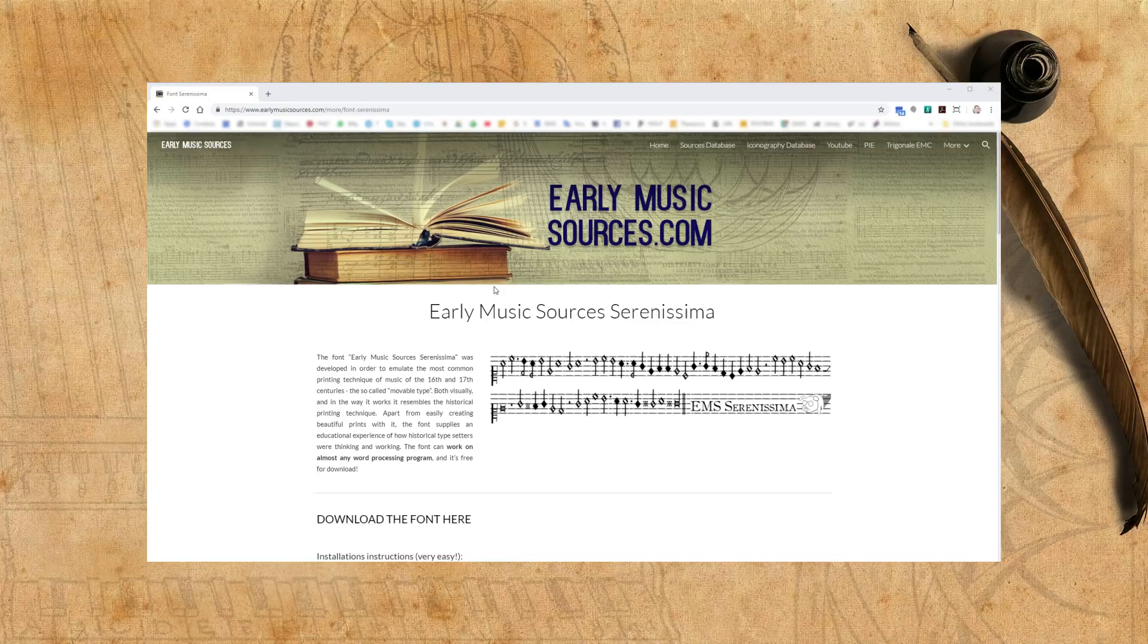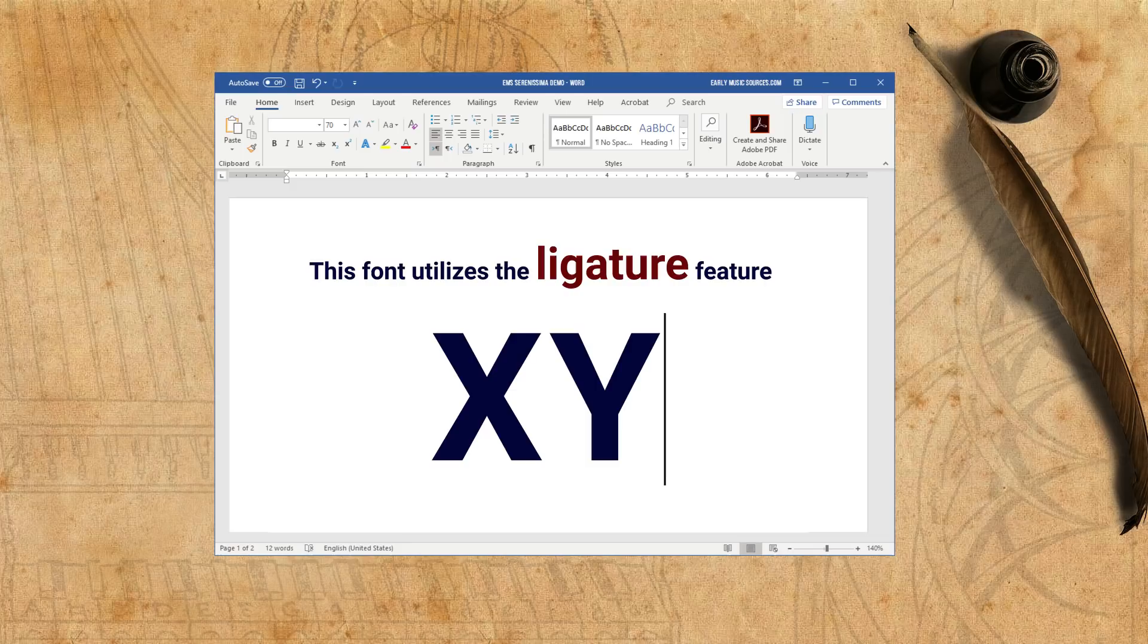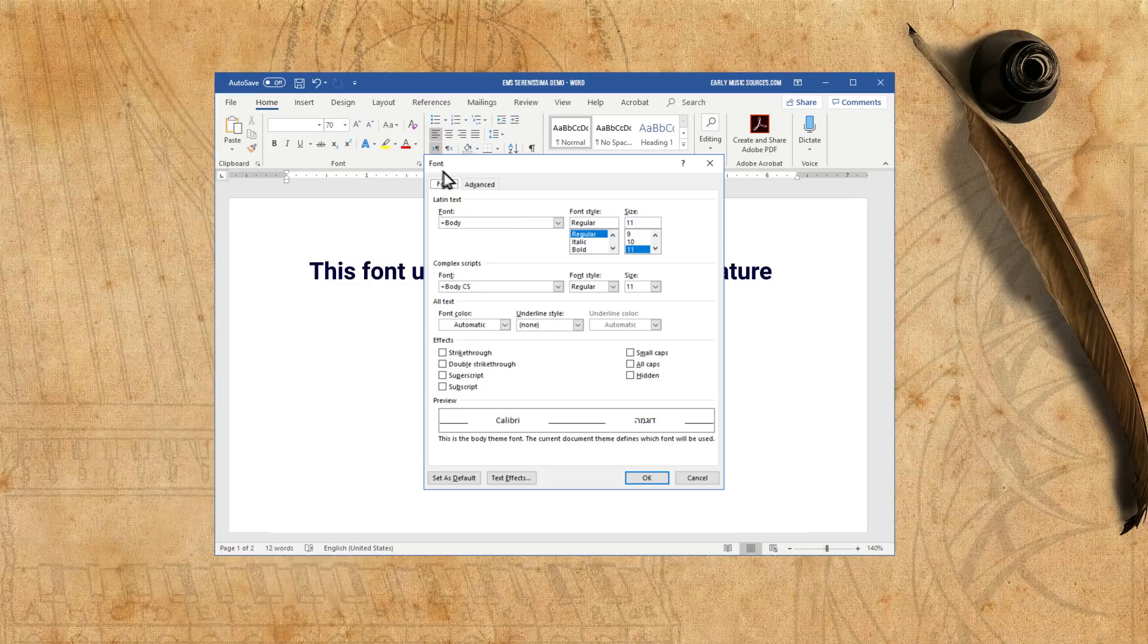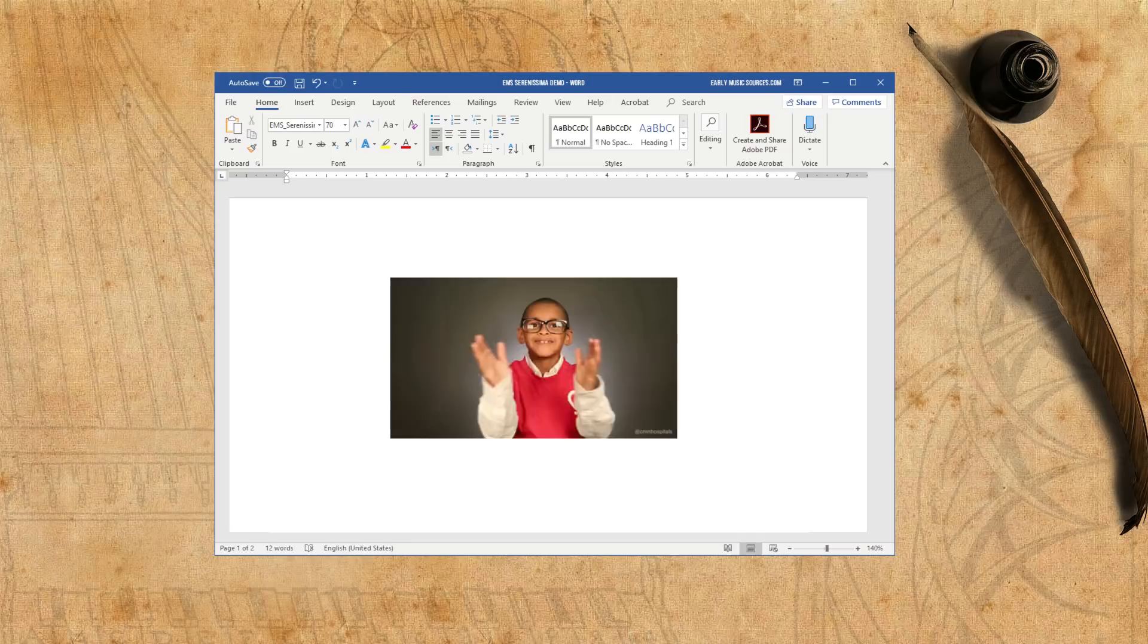This font utilizes the ligature feature, found in most word processors. When a certain character is followed by another certain character, a third character appears. So make sure to enable this feature in your program. Check this special web page for more help if you don't manage. Now, just type EMS in the font name bar, choose the font, enlarge it, and you are ready to go!